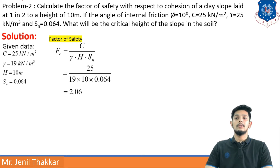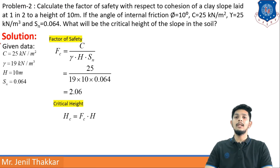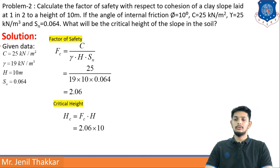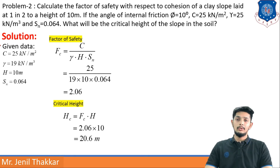Now finding critical height. The formula is FC = HC / H, making HC the subject: HC = FC × H. Substituting FC = 2.06 and H = 10 meters: HC = 2.06 × 10 = 20.6 meters. So the factor of safety is 2.06 and the critical height is 20.6 meters.